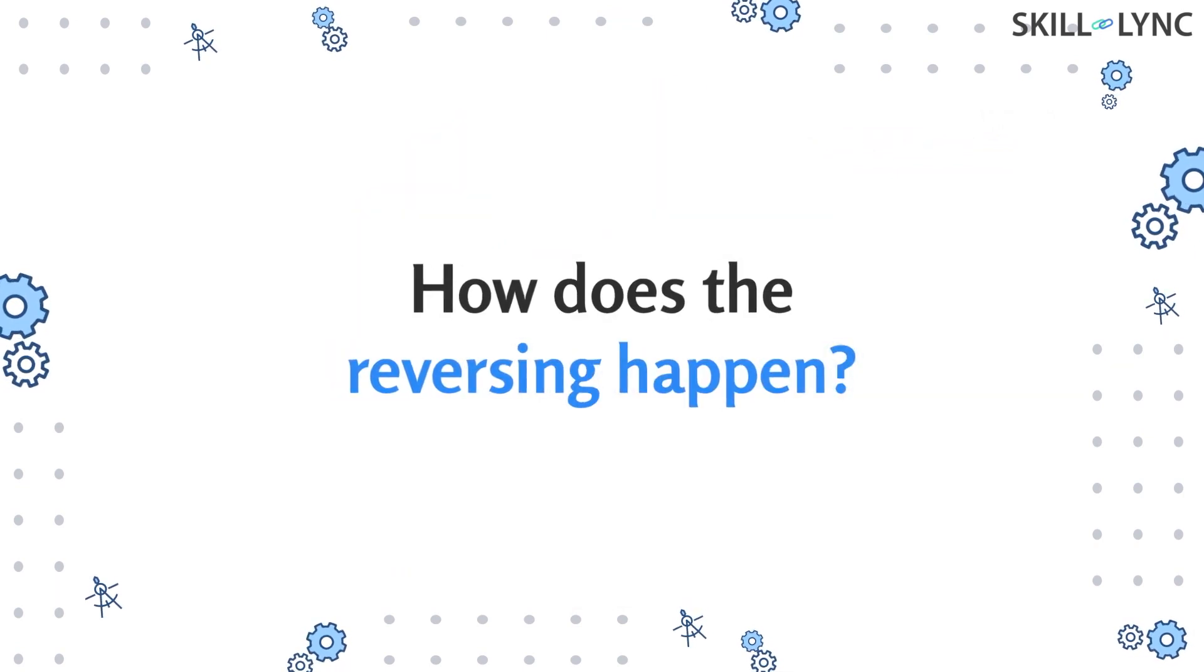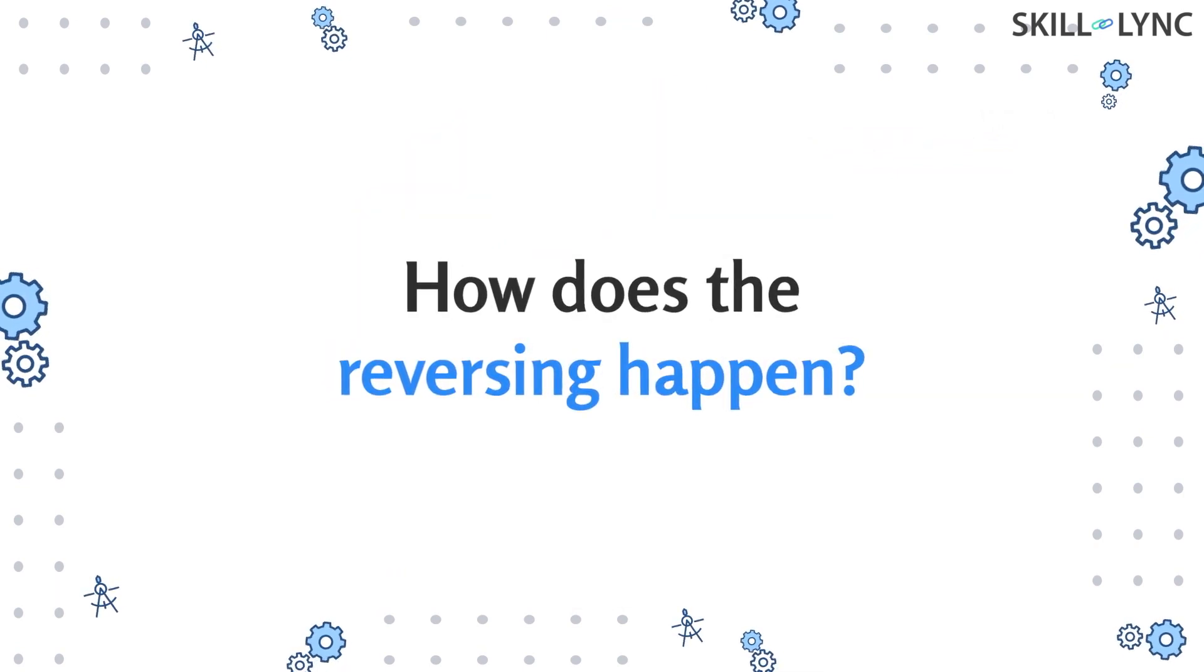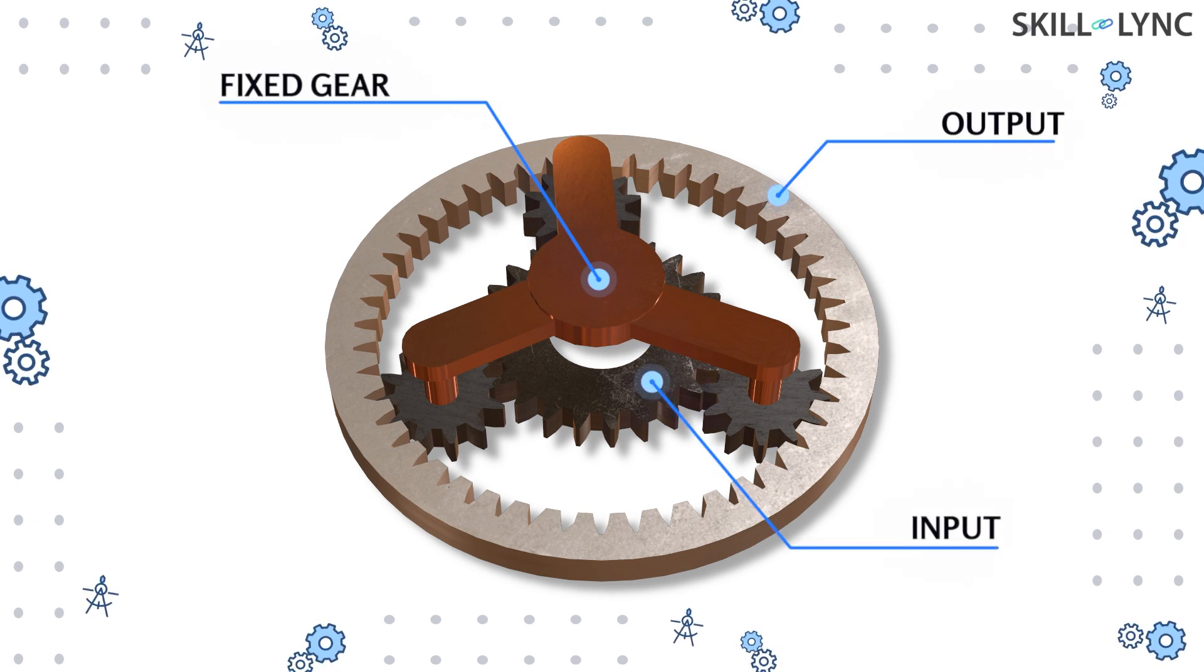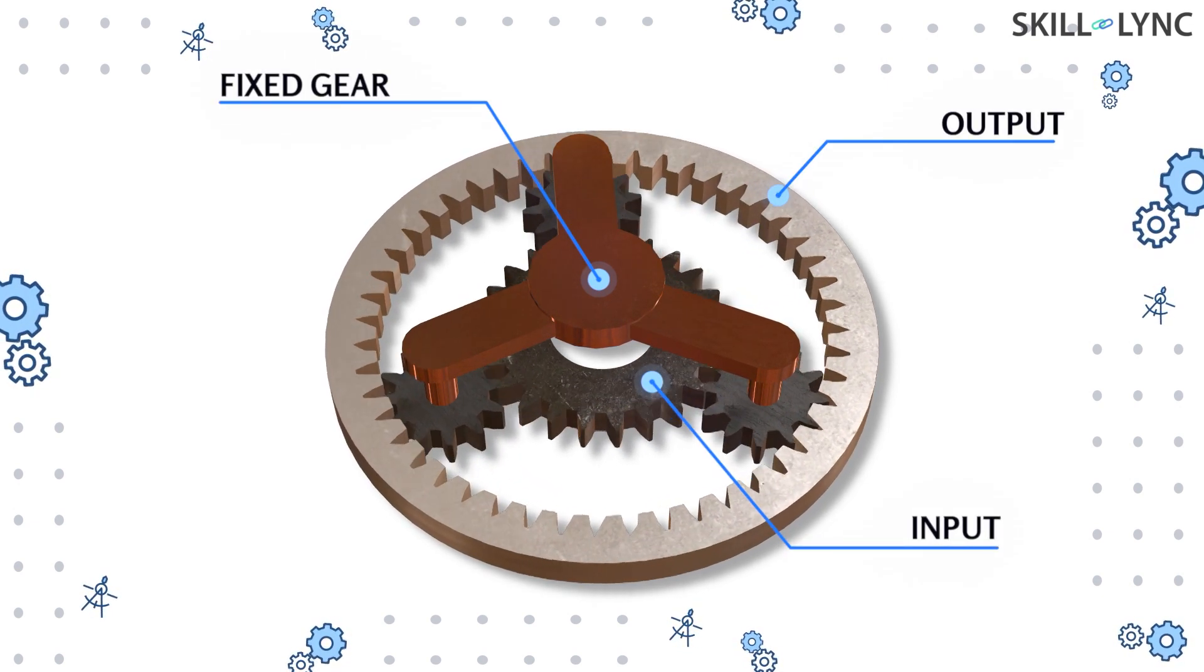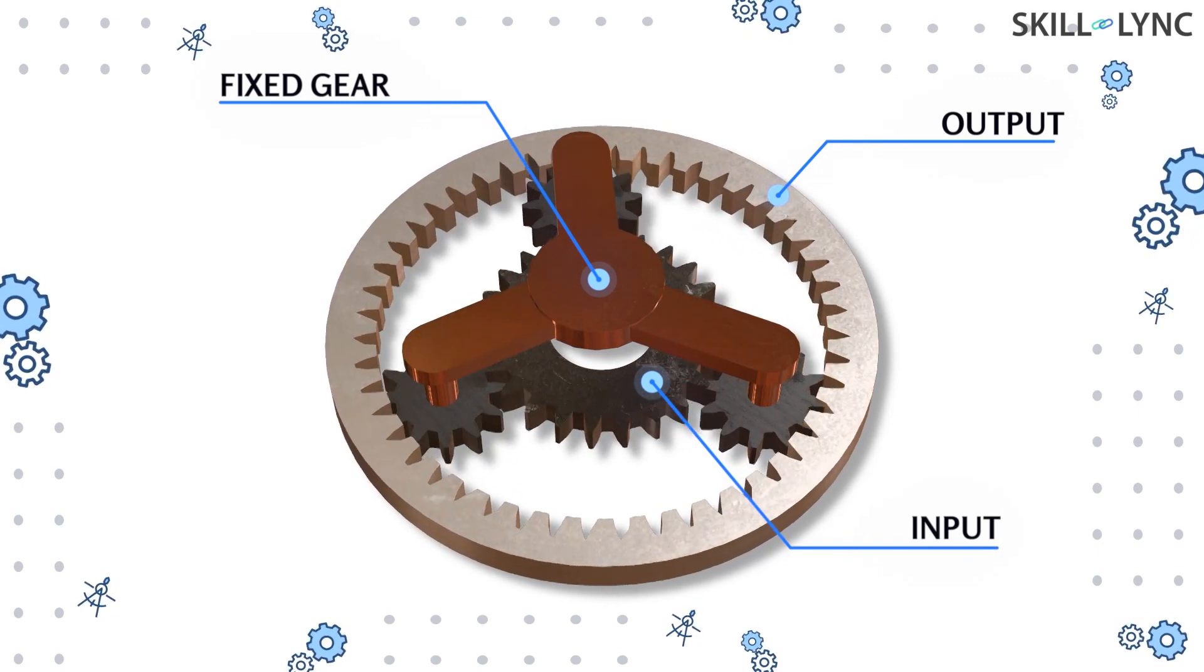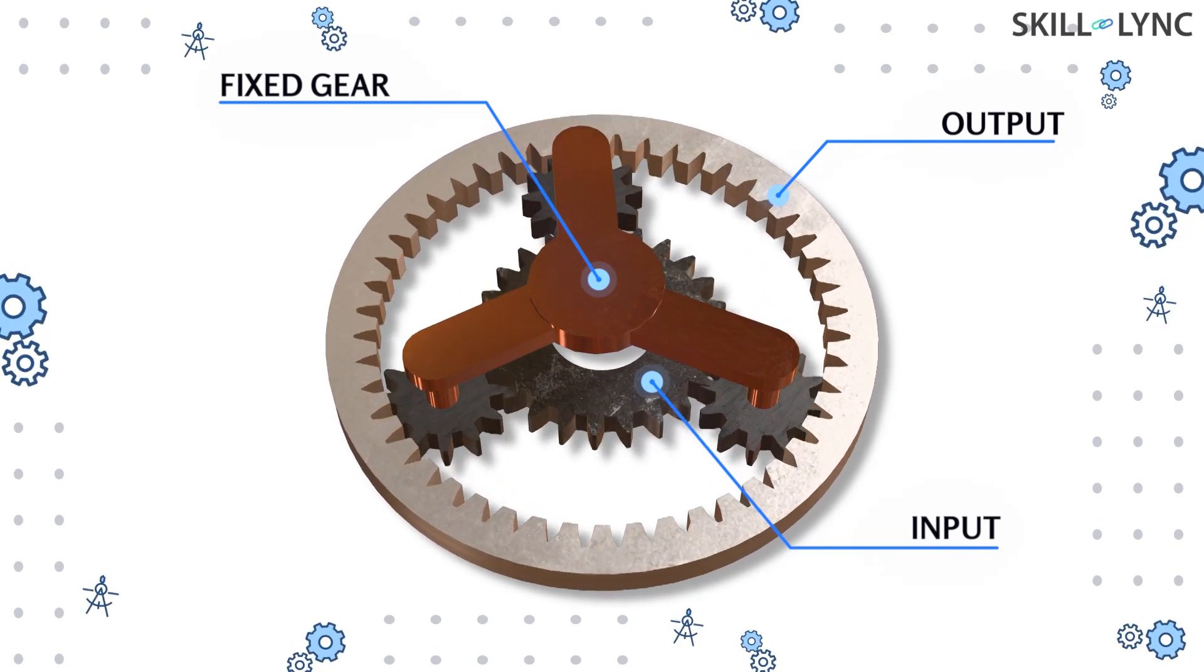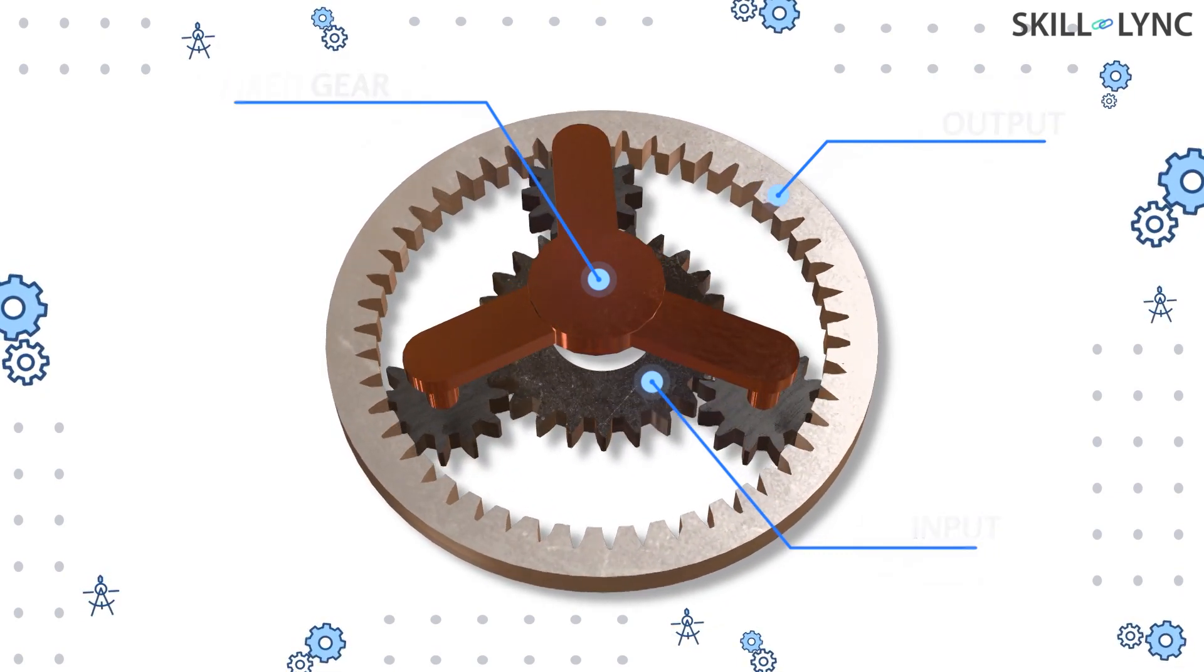So far we've seen the speed reduction stages, but how is the reverse gear achieved? For reversing, the carriage of planet gears is fixed and the sun gear is provided with the input. At this time the planet gears act as idler gears, making the ring gear rotate in the direction opposite to that of the sun gear, thus it reverses the motion of the output.